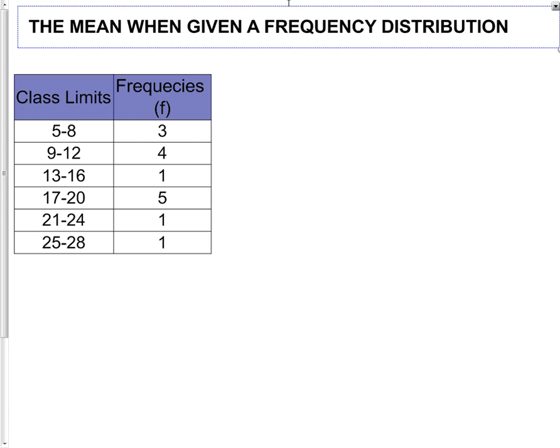Let's say you're asked to find the mean and all you're given is a frequency distribution like the one we're given here. We can still find the mean, or an approximation for the mean. What we have to do is we have to use a different formula.